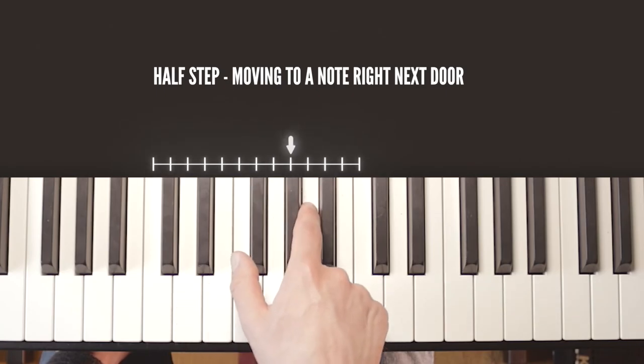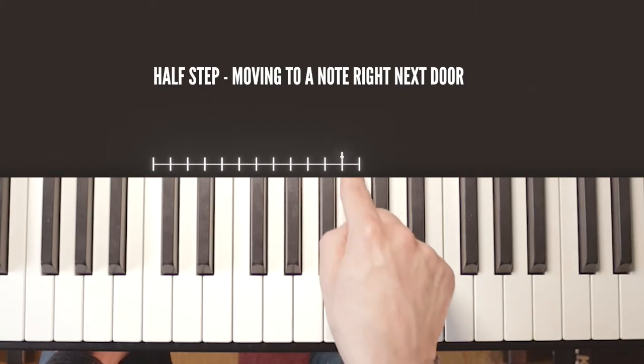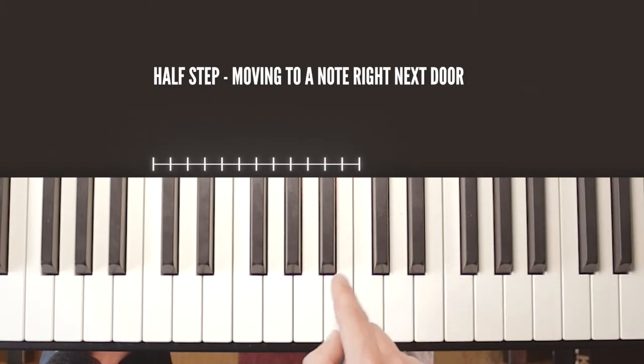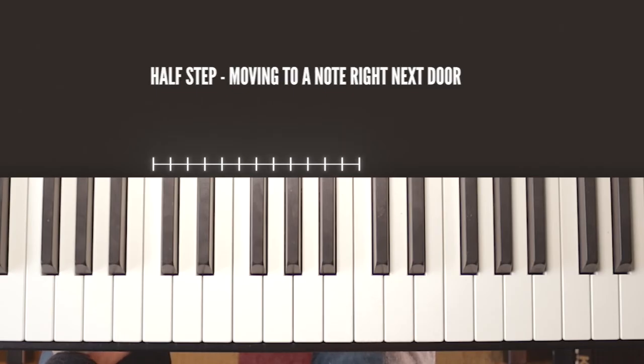And then it carries on: black, white, black, white, black, white. And then we have another point here with no black note in between the two white notes, so this is also another half step. This is the same note as when we started, so it just loops around from there. So you have to visually get used to some half steps being white to black or black to white, or in these two spots being two white notes in a row.